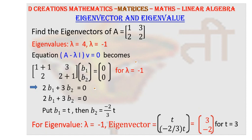Now, let us cleverly put the value 3 for t simply to get rid of this fraction. So if you put t is equal to 3, the eigenvector will become 3 as it is and minus 2. So we have got the second eigenvector as well.